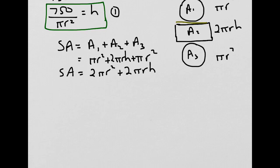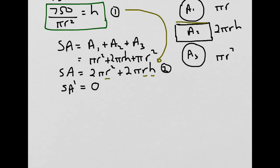That represents the surface area of the cylinder, and we want to find the minimum surface area required to hold 750 milliliters of liquid. We know that a maximum or minimum occurs when the derivative of a function equals 0. So our task is to find SA' and set it equal to 0. The surface area equation involves two variables — radius and height — and it's much easier to find a derivative with only one variable. So let's use equation 1 to substitute and express surface area only in terms of radius.